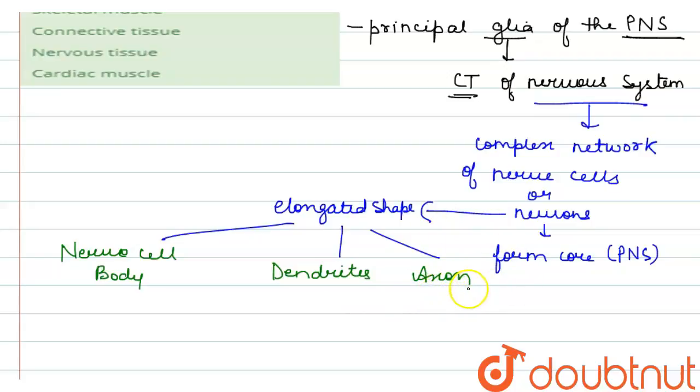Now they happen to be insulated by a fatty myelin sheath, which is formed by the cells called Schwann cells.